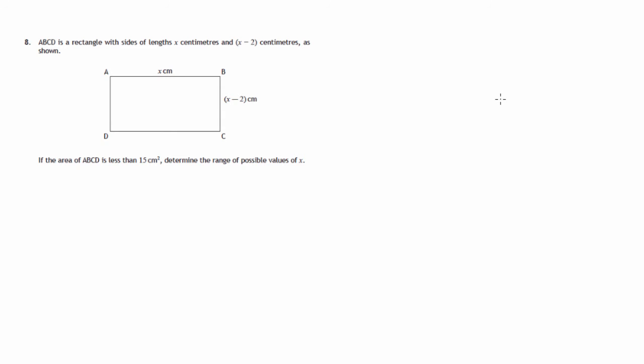This is question 8 from paper 1 of the 2015 SQA Curriculum for Excellence Mass exam. We're given a diagram of a rectangle with length and breadth x and x minus 2. We're told the area is less than 15 and we have to determine the range of possible values for x.